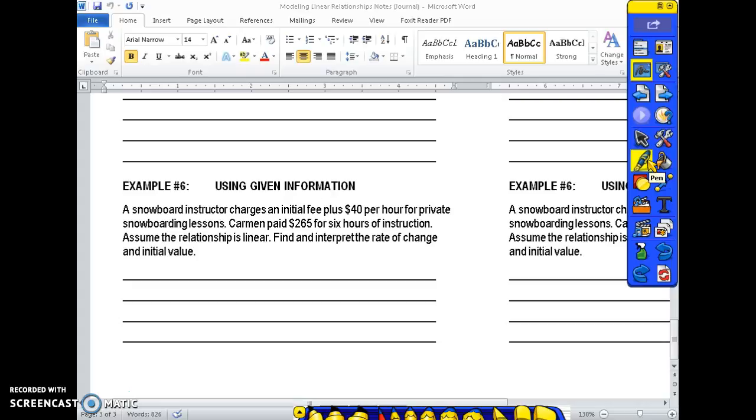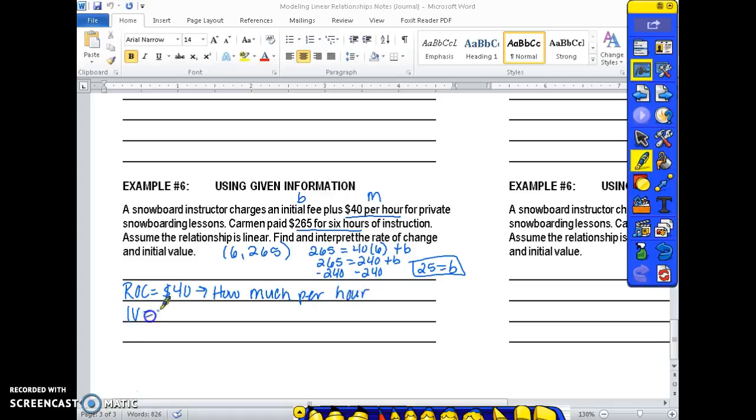And number six. A snowboard instructor charges an initial fee plus $40 per hour for private snowboarding lessons. Carmen pays $265 for six hours of instruction. Assume the relationship is linear. Find and interpret the rate of change and initial value. So $265 equals $40 for the six hours plus the initial value. 40 times 6 is 240. And I subtract 240 to find my initial value of 25. So the rate of change is $40 which represents how much they pay per hour. And my initial value is 25 which is the initial fee that you pay the snowboard instructor before you take any hours worth of lessons.